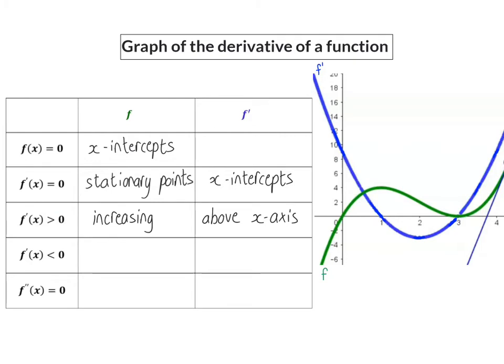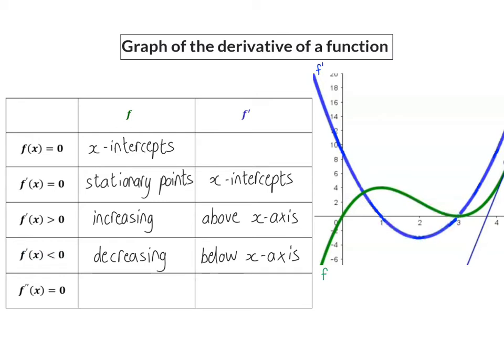The opposite is also true: when we determine where the derivative is smaller than zero, for the original function we are determining where it is decreasing because the gradient is negative. And for the graph of the derivative itself we are determining where it is below the x-axis. So on the sketch the green function is decreasing between 1 and 3, and that is also where the blue graph is below the x-axis.